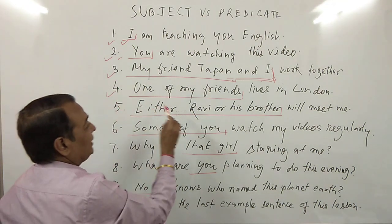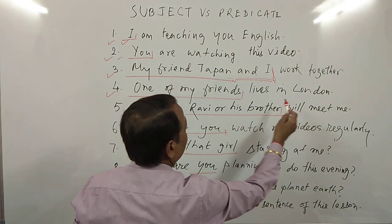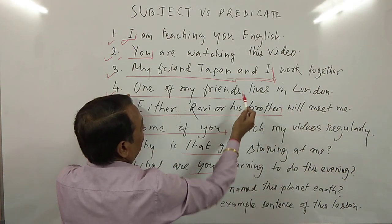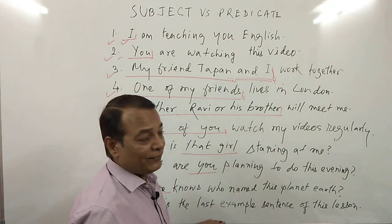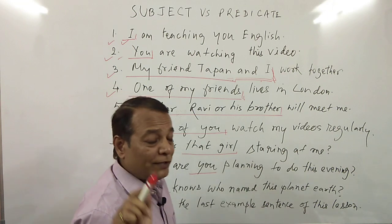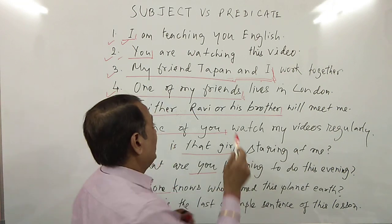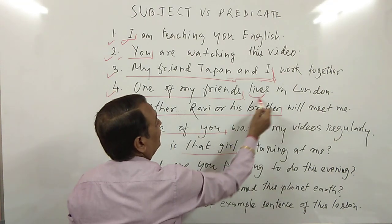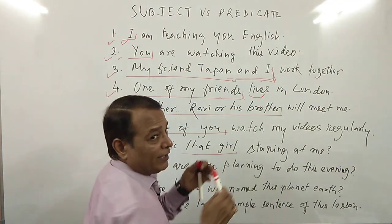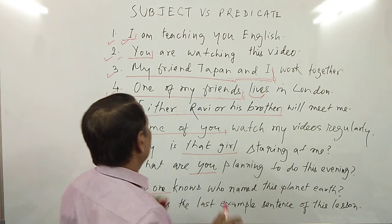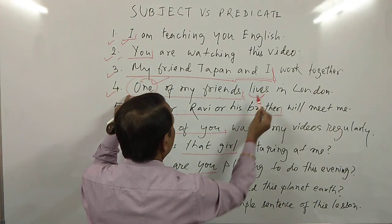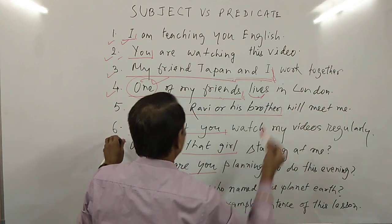Number four: 'One of my friends lives in London.' I am talking about one of my friends — I have many friends, but one of them lives in London. I would like to suggest you always check the agreement of the verb with the subject. Here, the subject seems to be plural, but actually it is not plural because you are talking about one person. That's why it is 'lives': 'One of my friends lives in London.'